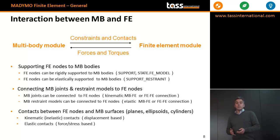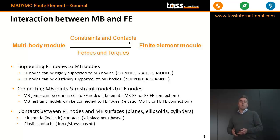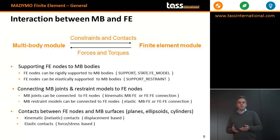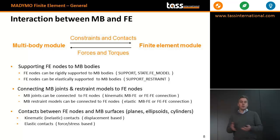A second way of interaction between the multibody module and the finite element module is connecting the FE structure with multibody kinematic joints or with dynamic restraint models to a multibody structure. The connections for the joints can be either between two FE structures or between an FE structure and a multibody body.